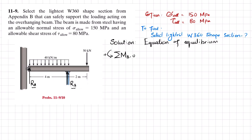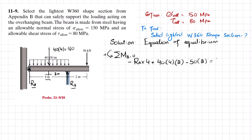Writing the moment equation: RA × 4 (clockwise, positive) + 40 × 4 × 2 (counterclockwise, positive) − 50 × 2 = 0. Solving gives RA = 55 kN.